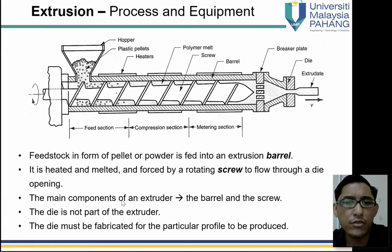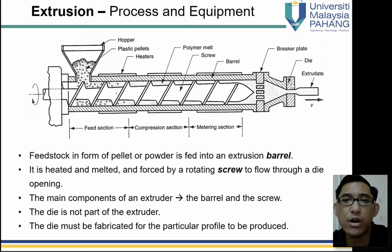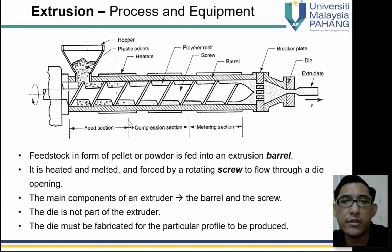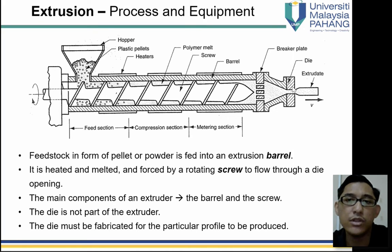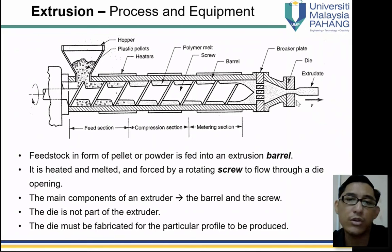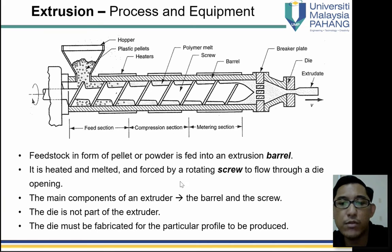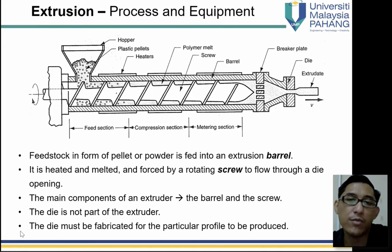The main components of the extruder are the barrel and the screw. The die is not part of the extruder — the die is outside the extruder and can be changed. What pushes material out is the main part of the extruder. The die is like a tool — like a machine with interchangeable tools. The die must be fabricated for the particular profile to be produced, similar to a mold — the die must be produced specifically for the product we want to make.